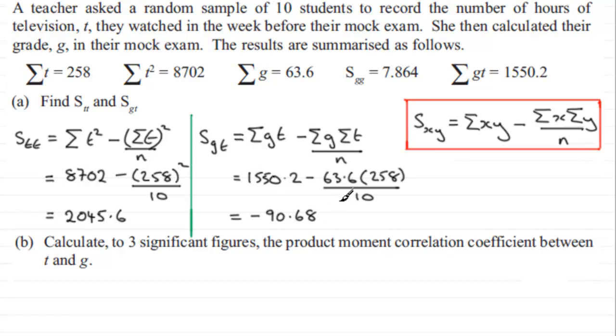Okay, now in part b we've got to calculate to three significant figures the product moment correlation coefficient between t and g. Now again, we should be familiar with the product moment correlation coefficient. It's given by the letter r, and if you look in your formula book or textbook it would normally be given in terms of the variables x and y.